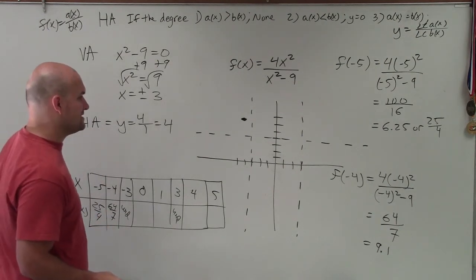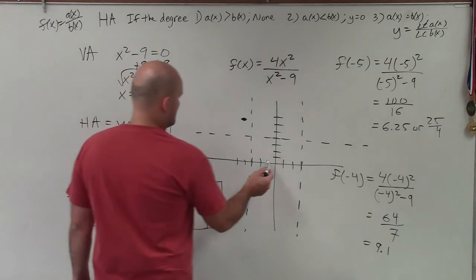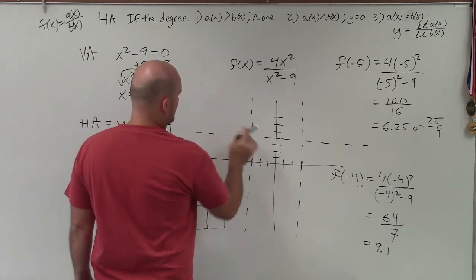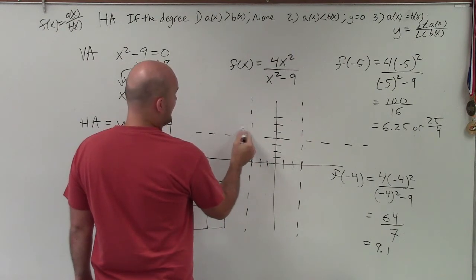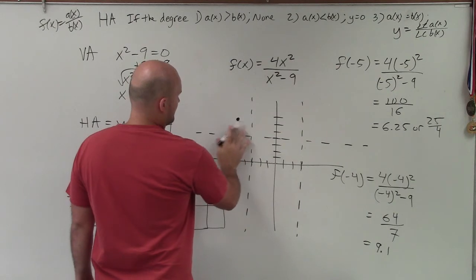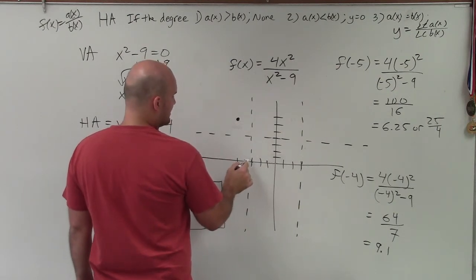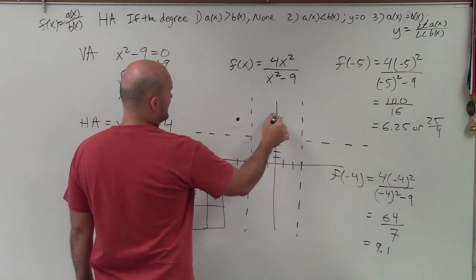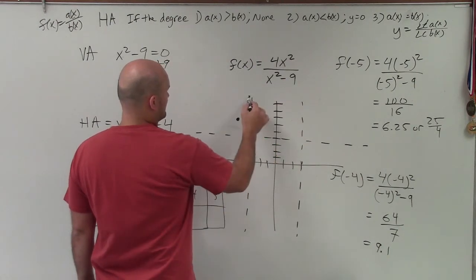So we'll just round it to 9.1. So that's 64 over 7. So therefore, at negative 4, 1, 2, 3. Oh, shoot. Sorry about that. That was at negative 5 was right there. Then at negative 4 is 9. So 1, 2, 3, 4, 5, 6, 7, 8, 9.